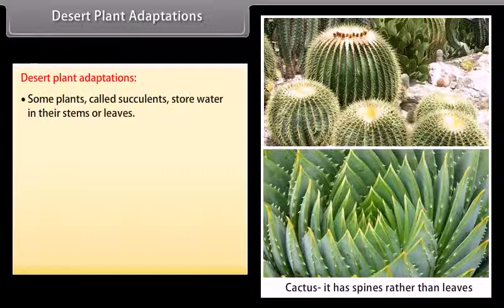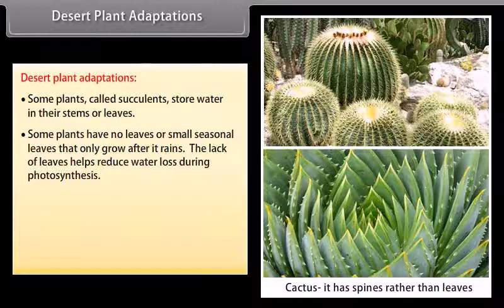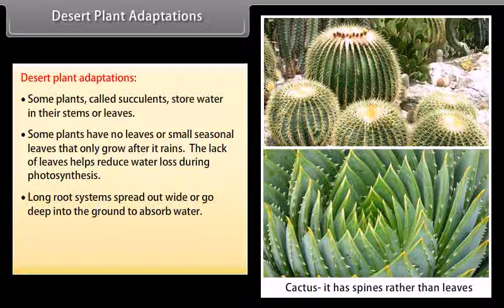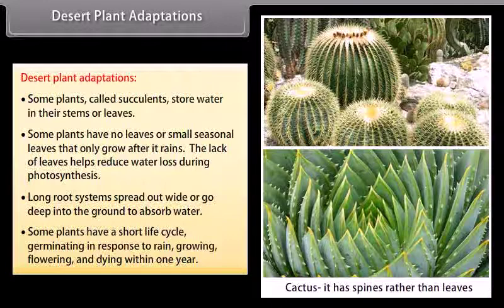Some plants called succulents store water in their stems or leaves. Some plants have no leaves or small seasonal leaves that only grow after it rains — the lack of leaves helps reduce water loss during photosynthesis. Long root systems spread out wide or go deep into the ground to absorb water. Some plants have a short life cycle, germinating in response to rain, growing, flowering, and dying within one year.